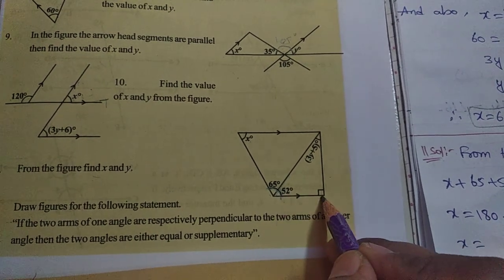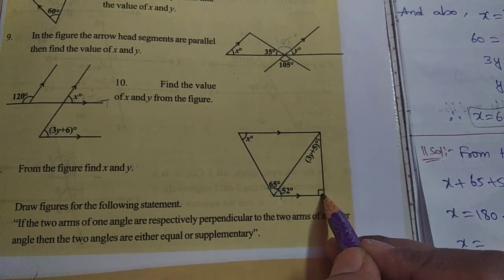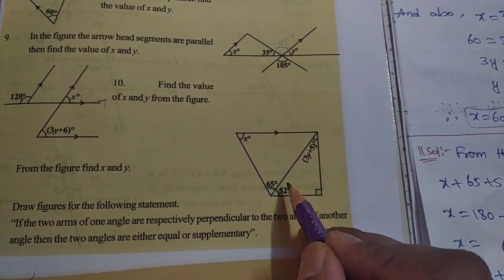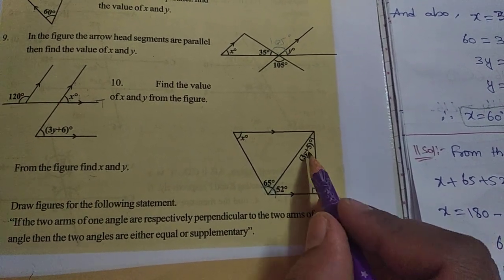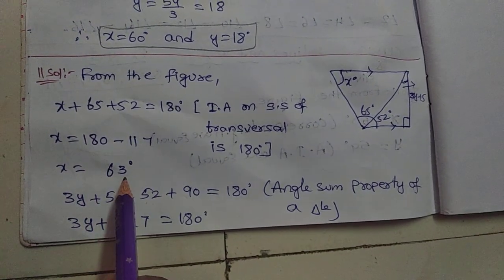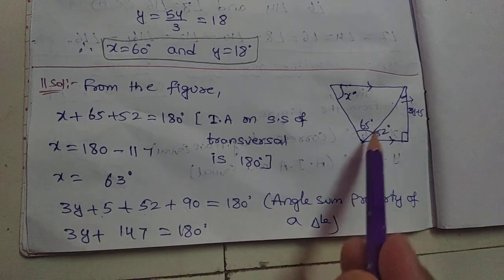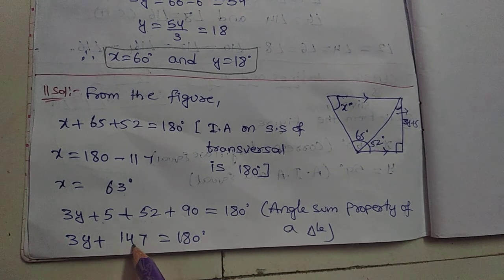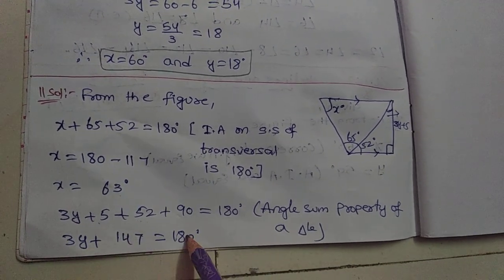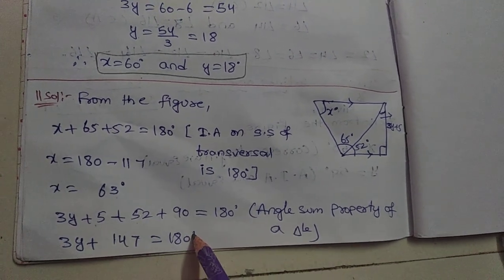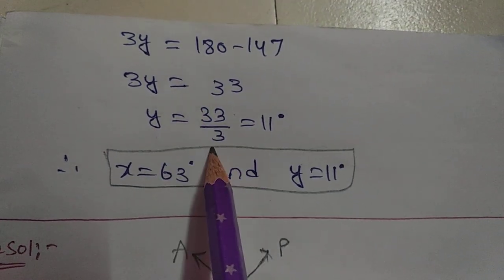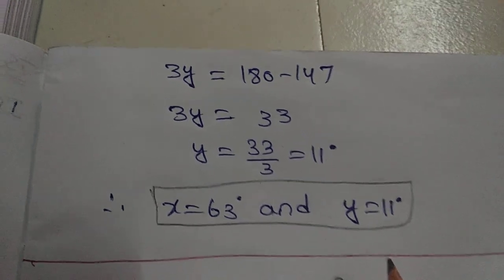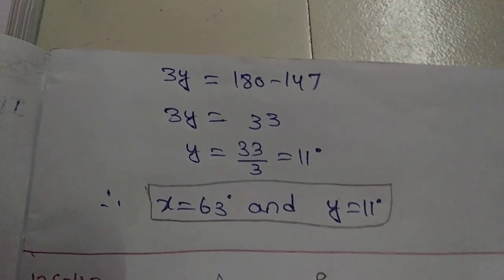Using the angle sum property: 52 plus 3y plus 5 plus 90 degrees (right angle) equals 180 degrees. Adding these three numbers we get 147, so 3y plus 147 equals 180 degrees. Therefore 3y equals 180 minus 147, which equals 33 degrees. So y equals 33 divided by 3, which equals 11 degrees. x value is 63 degrees and y value is 11 degrees. This is the solution. Remaining problems I will explain in the next video — thank you for watching.